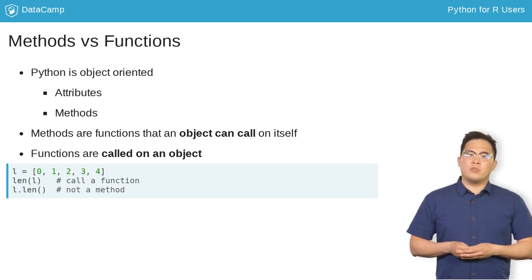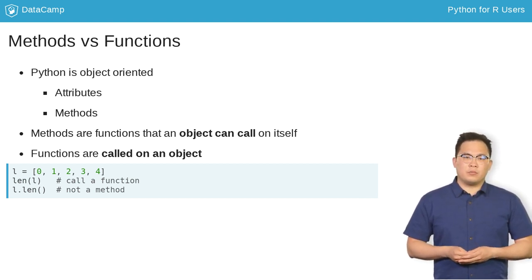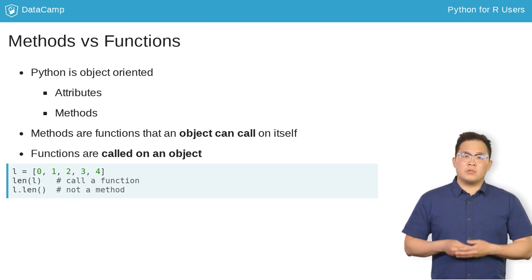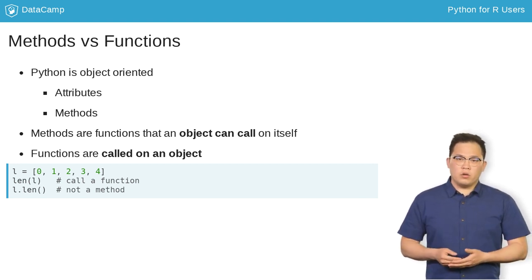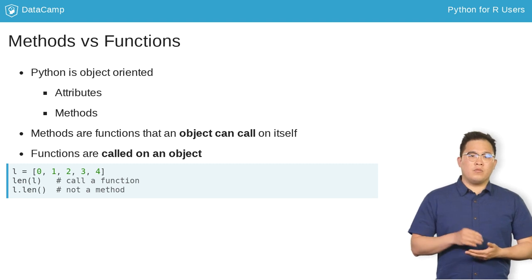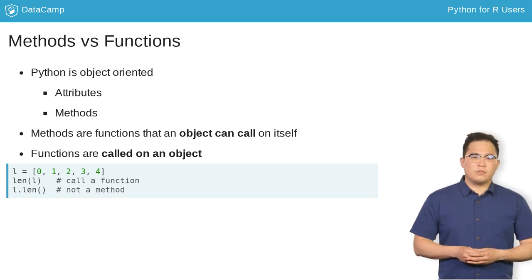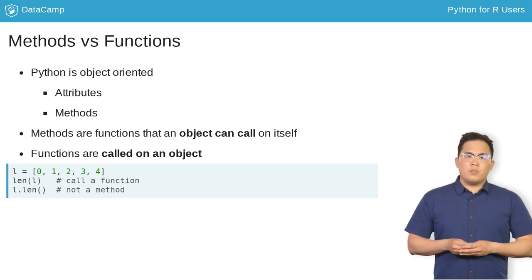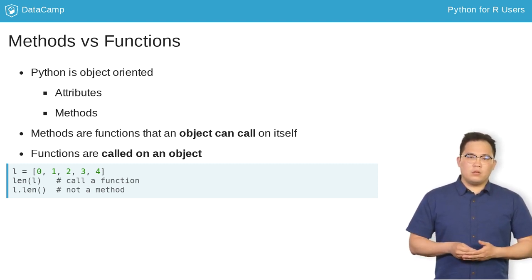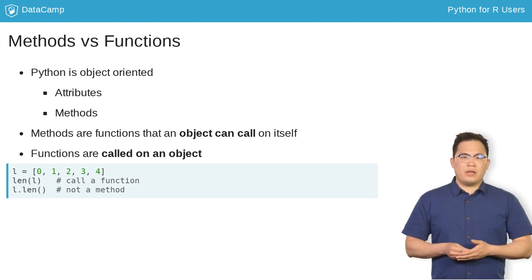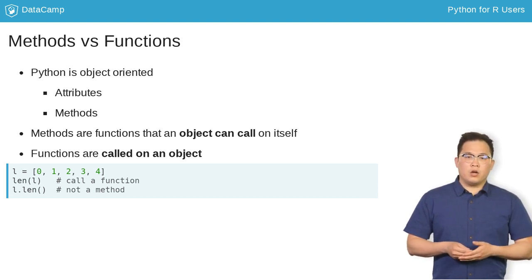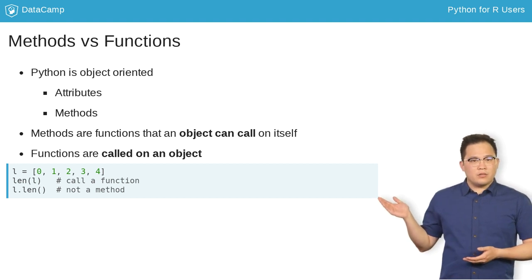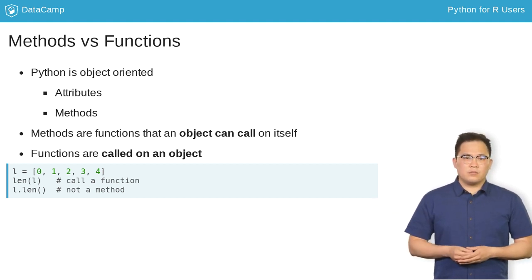We talk about attributes in a later chapter. Methods are functions that an object calls, whereas you pass objects into functions. Recall you passed l, a list, to the function len, rather than calling the method len on l. Did you notice the change in syntax? Let's discuss this.